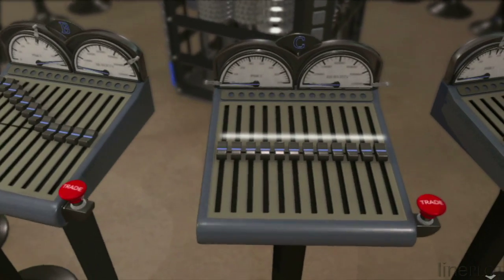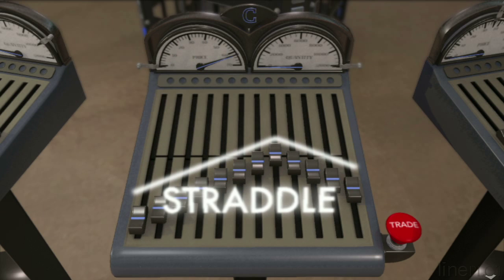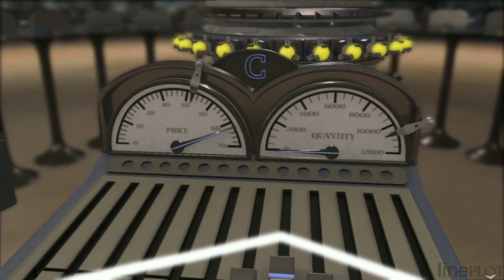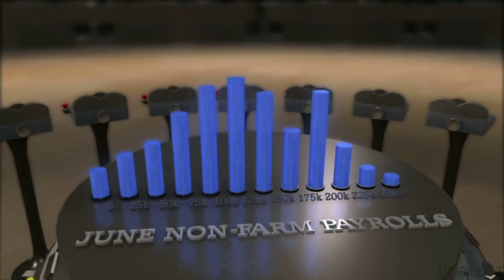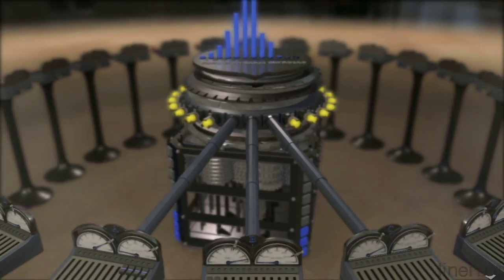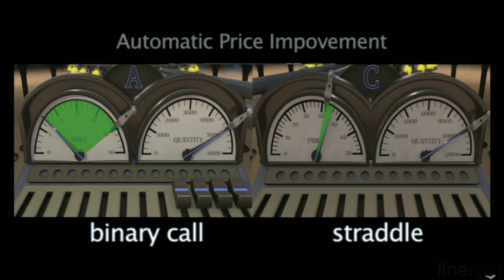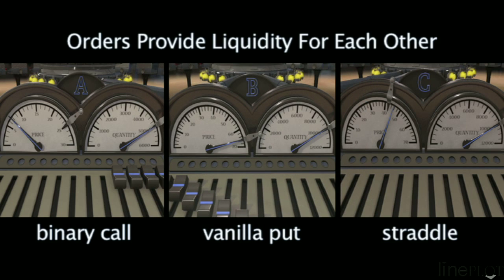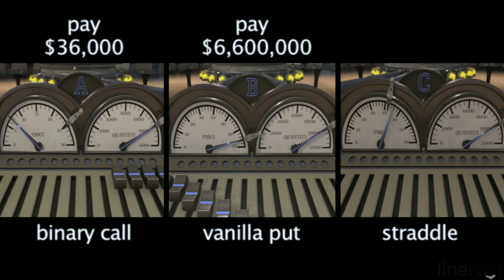A third trader believes that the NFP number will be close to 150,000. His strategy is to sell volatility by selling the 150 straddle. Since this is a sell order, the limit price is the lowest price he will accept. He enters the order, which interacts with the previous orders. All orders are fully filled, and the call and straddle orders have received price improvement. These three orders provide liquidity for each other. At the close of the auction, all prices and filled quantities are binding. Traders A and B pay premium for their filled contracts, and Trader C receives premium from his sale.